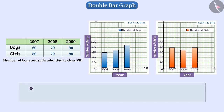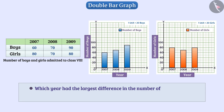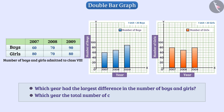For example, it would be difficult to know which year had the largest difference in the number of boys and girls. It will also be difficult to determine which year the total number of class 8 students was highest.